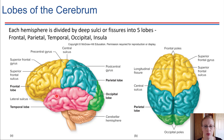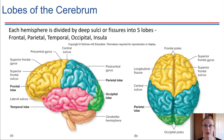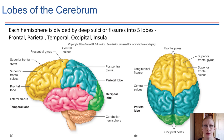The temporal lobe is really what allows us to experience auditory sensations. This is also the region where memories involving auditory and visual information tend to be stored. Memory storage doesn't happen in just one location — it involves a number of different places — but auditory and visual information is stored here in the temporal lobe.